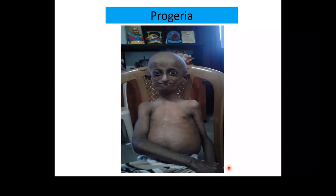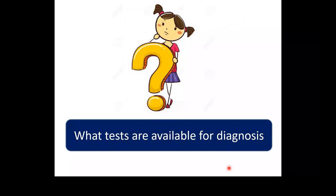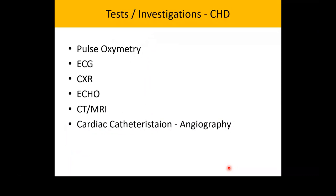Once we've discussed syndromes, what tests are available for diagnosis? The basic tests are pulse oximetry — which is underutilized at the moment — ECG, which is helpful especially in arrhythmia management, and chest X-ray. Echocardiography is very helpful — a non-invasive method for making most diagnoses. Further imaging such as cardiac CT, cardiac MRI, and cardiac catheterization and angiography are more sophisticated investigation tools in the diagnosis and management of congenital heart disease.